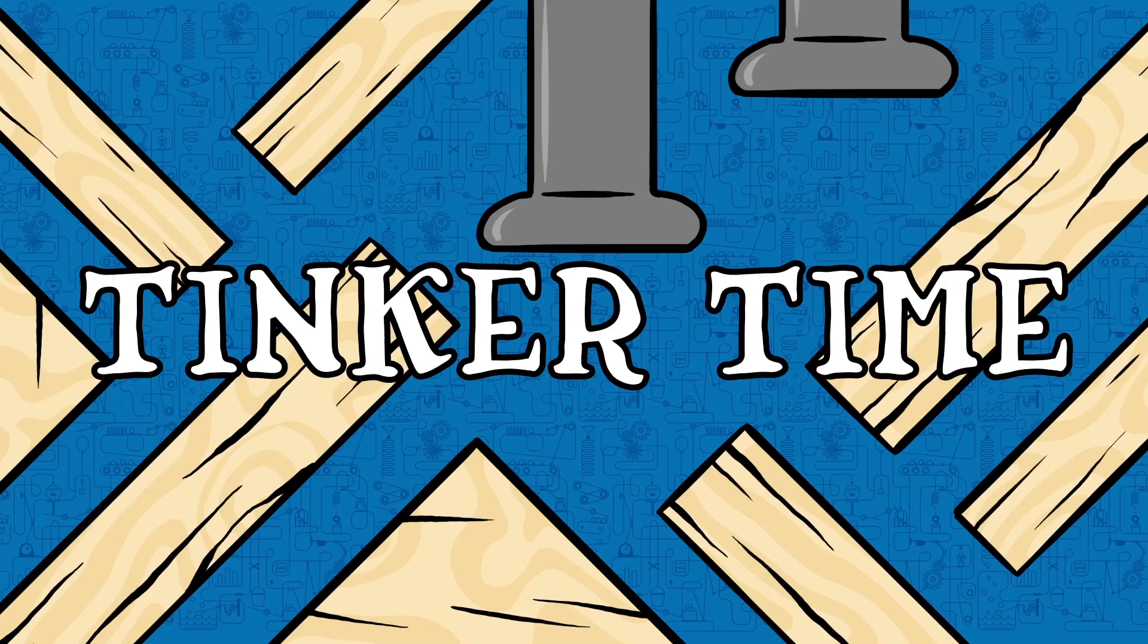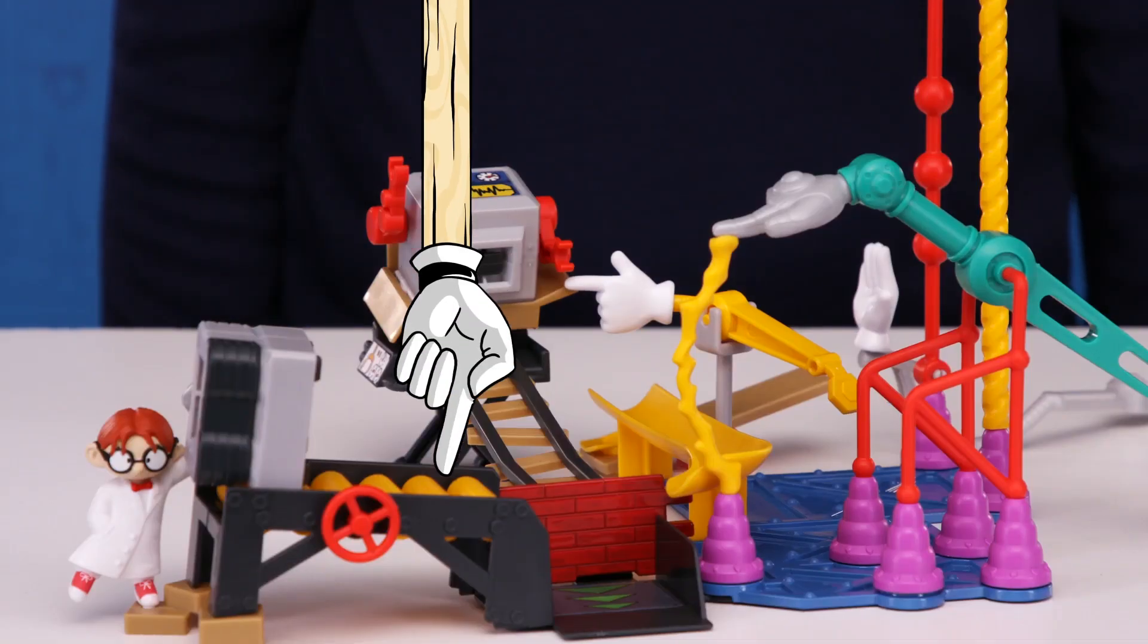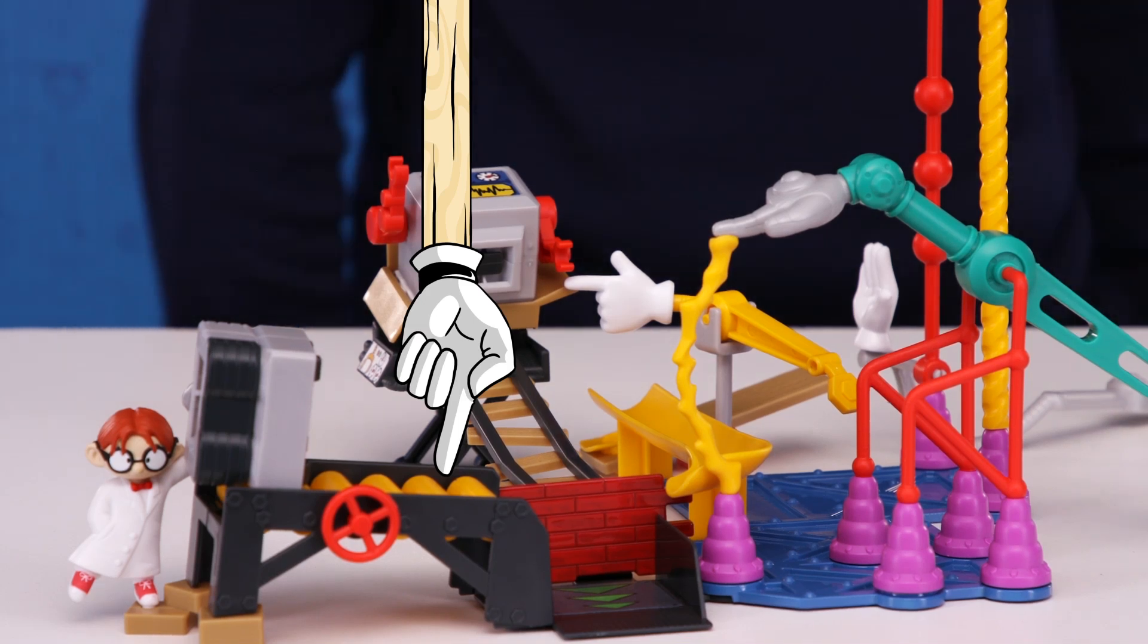Tinker time. We need to decrease the speed of the conveyor belt by adding a sticky dot in between the two rollers at the end to connect them. This will stop the last two rollers from moving and slow down the robot feet so it lands in the proper location. Reset!